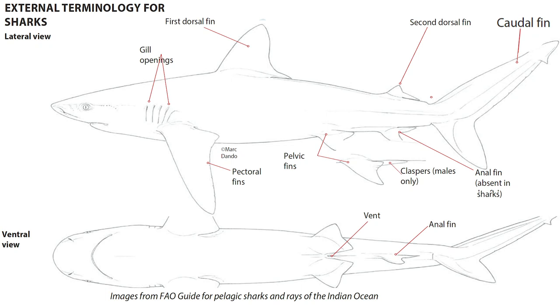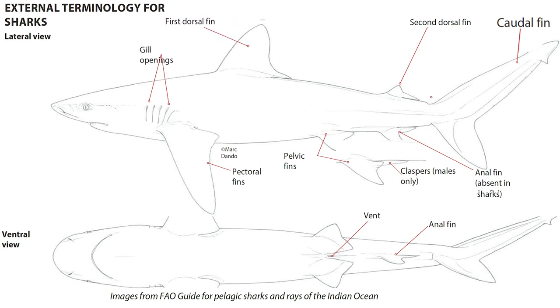Let's dive straight in. First of all, we're going to look at the fins and some of the external anatomy. What we have along the top side of the shark, which is what we call the dorsal side, are their two dorsal fins. Most shark species have both a first dorsal fin and a smaller second dorsal fin near their tail.